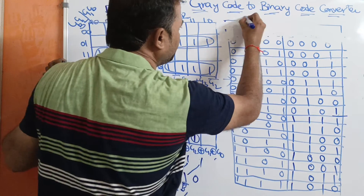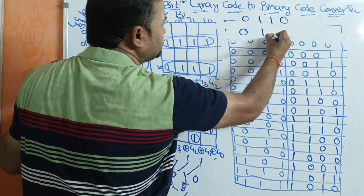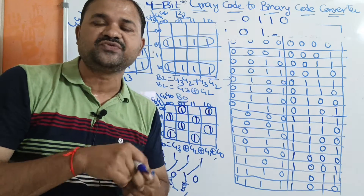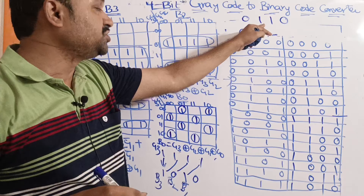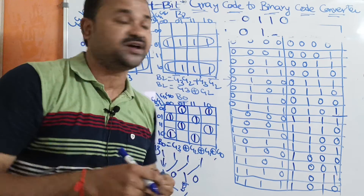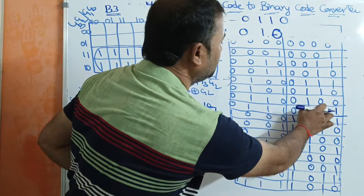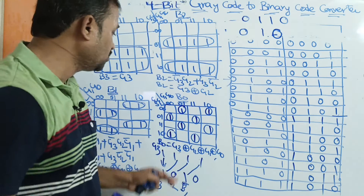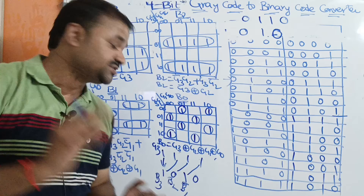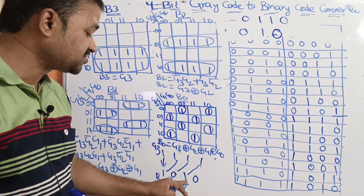Let us verify with grey code 0110. The first bit is 0, so b3 = 0. The formula for b1 is g3 exclusive-OR g2 exclusive-OR g1. What is 0 exclusive-OR 1? That is 1. Then 1 exclusive-OR 1 is 0. So b1 = 0 for this example, confirming the formula works.